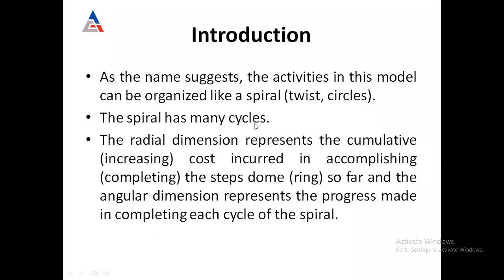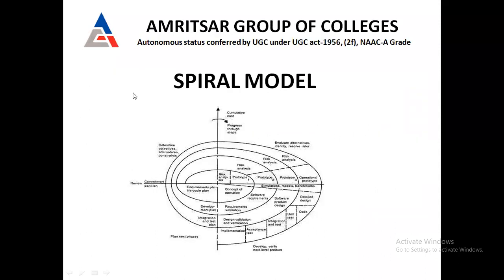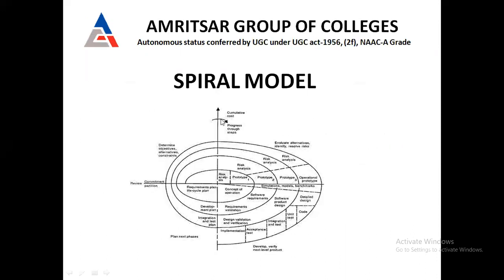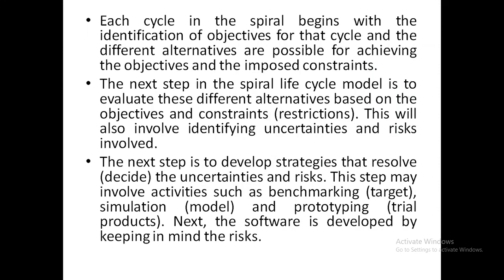The spiral has many cycles — cycle one, cycle two, cycle three, and cycle four. The radial dimension represents the cumulative cost incurred in accomplishing the steps done so far, and the angular dimension represents the progress made. The cumulative cost keeps on increasing as we increase the number of cycles. More cycles means more spirals, and both cost and time increase accordingly.